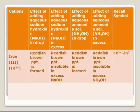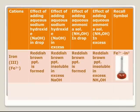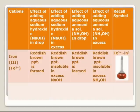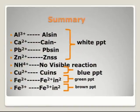Iron-3 (Fe³⁺) forms a reddish-brown precipitate in both sodium hydroxide and ammonium hydroxide solutions. It is insoluble in excess sodium hydroxide and also insoluble in excess ammonium hydroxide — just like iron-2. One of the best ways to remember the color is the color of rusted iron. The recall symbol is Fe³⁺ IN² (IN square), which stands for insoluble in both sodium hydroxide and ammonium hydroxide. Iron-3 is reddish-brown — the color of rusted iron.